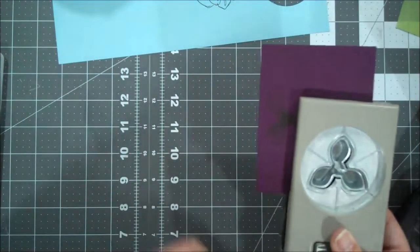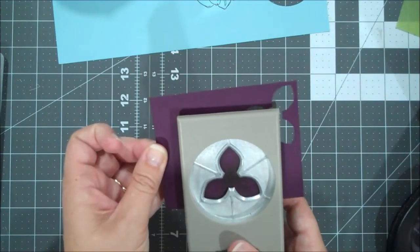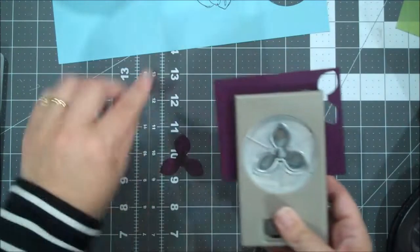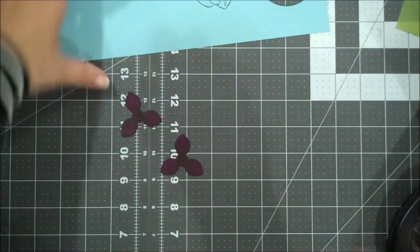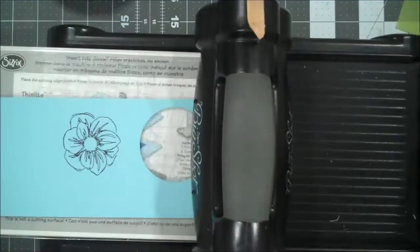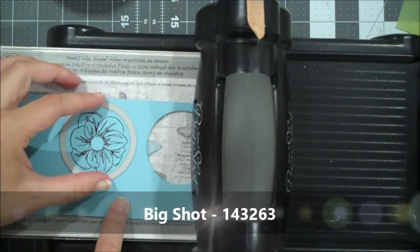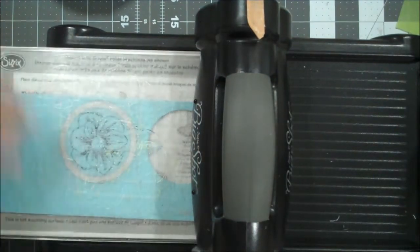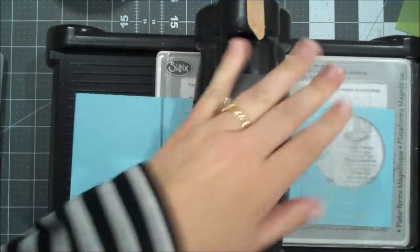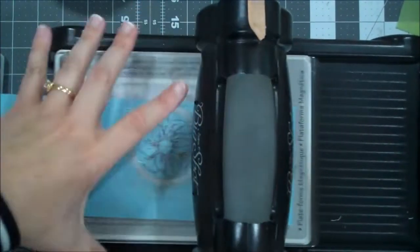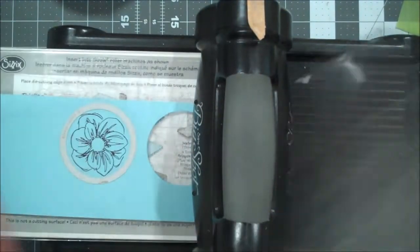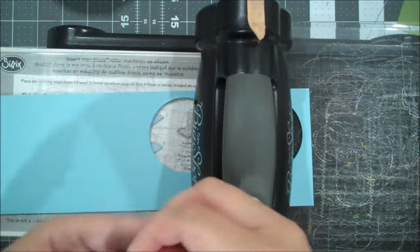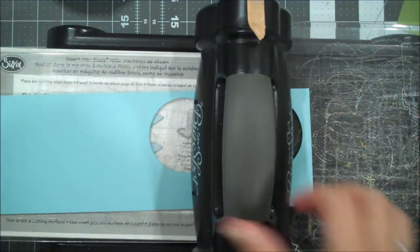So we will set that aside and then we're going to grab our punch and let's do our punching here. Love this punch because I love that we can build dimension with these flower layers. Alright. Let's grab our big shot. Let's grab that circle. We just want to line that up nicely and then we'll roll that through. Let's dig this to the side.